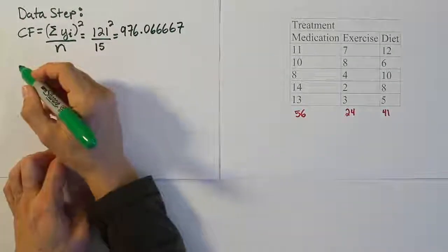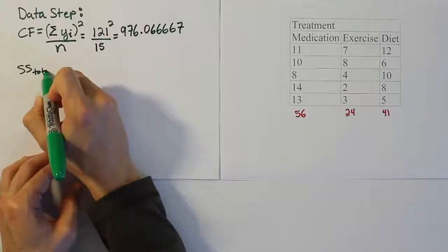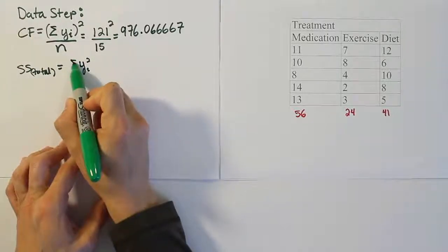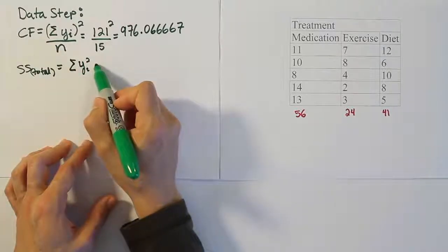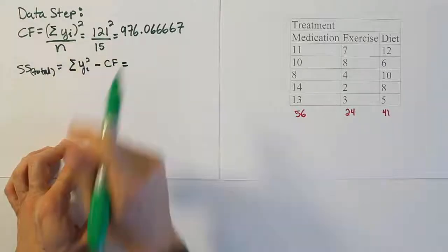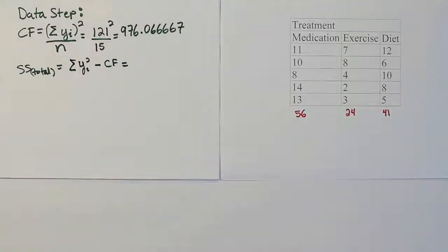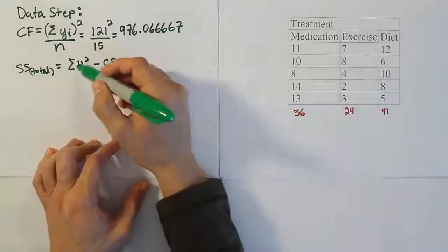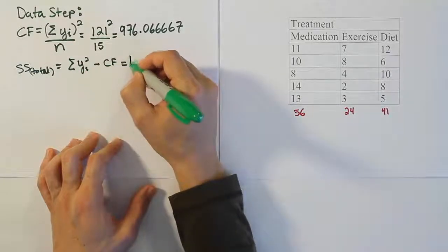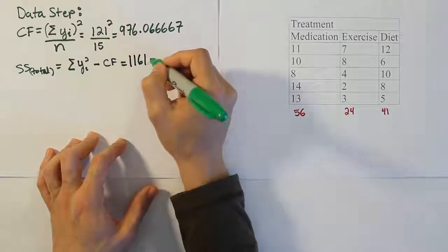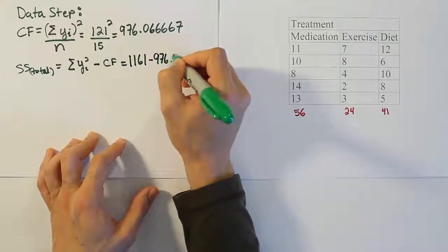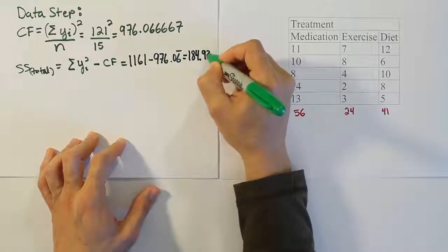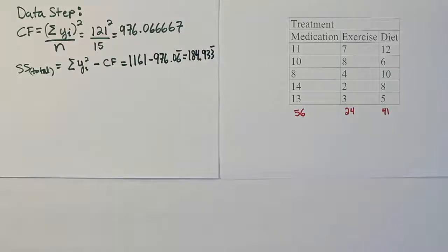Next we calculate the sum of squares total (SSTotal). We take every data value, square it, sum all those squared values, then subtract the correction factor. Summing all squared values gives 1161. Subtracting the correction factor of 976.0667 gives SSTotal = 184.9333 (repeating).